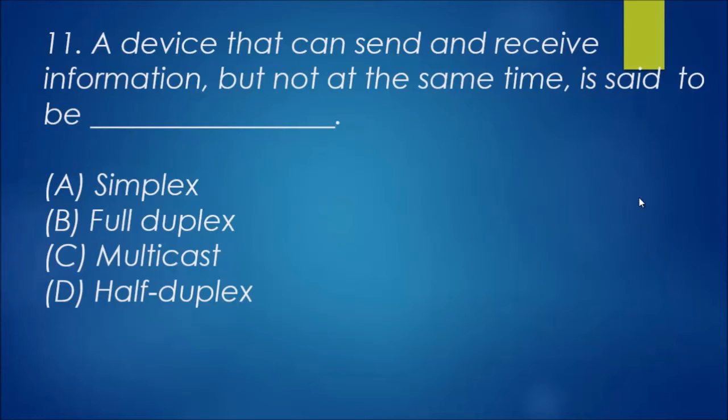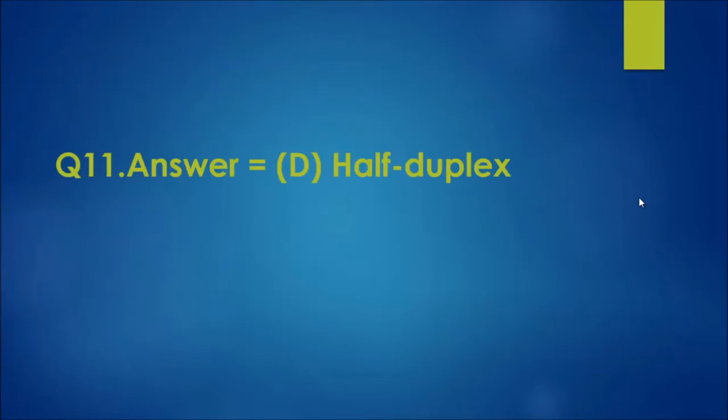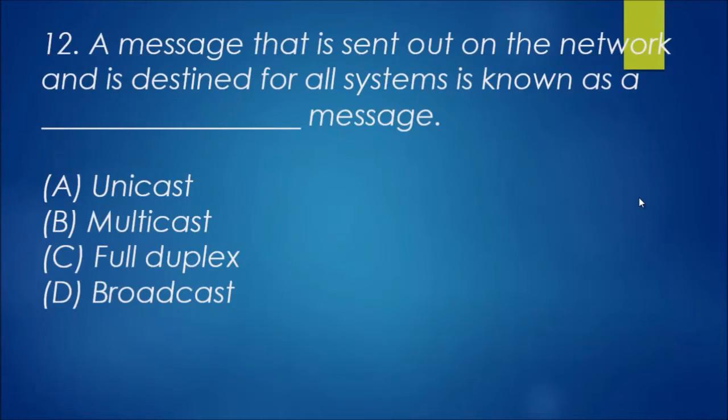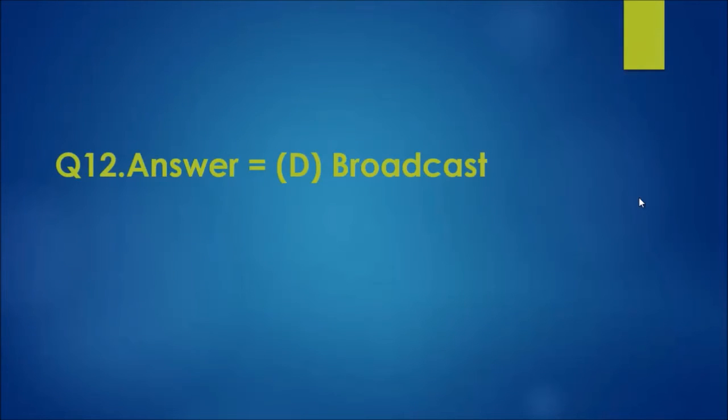Number 12: a message that is sent out on the network and is destined for all systems is known as a blank message. Unicast sends out to one client, multicast sends out to multiple, full duplex is irrelevant, so that leaves us with D being broadcast. A broadcast message sends out to everyone, basically all clients. If you saw in the last one, the broadcast MAC address is all F's.